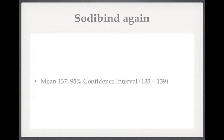Now, suppose we're doing a hypothesis test and our experimental hypothesis is that average serum sodium levels in those taking sodium bind is less than those in the general population. Then the probability of getting a result of 137 under the null hypothesis is less than 0.05 — that is to say, the p-value is less than 0.05. So we can learn a lot just from this one value and its confidence interval.